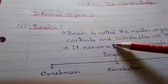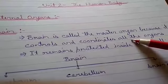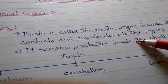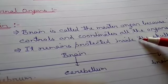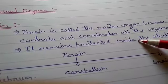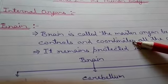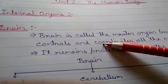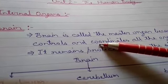Our first organ is the brain. Brain is called the master organ because it controls and coordinates all the organs. Just as in a computer, the CPU is called the brain of the computer because it controls all the activities — similarly, in our body, all activities are controlled by the brain.